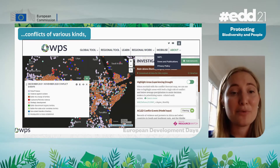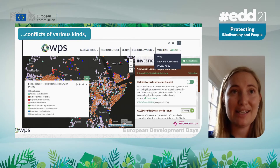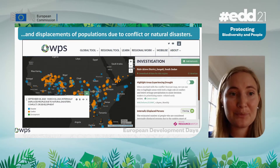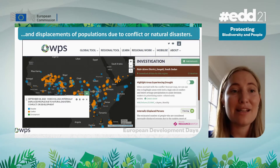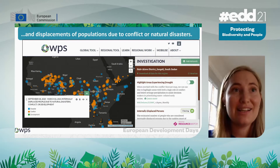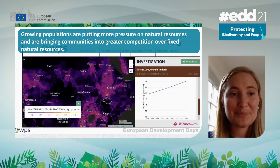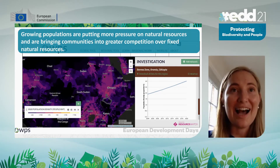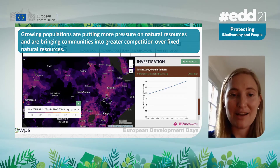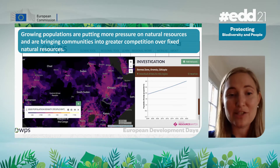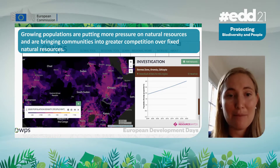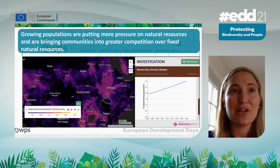We can also check out previous conflicts using the ACLED data, and view displacement of populations due to conflict and natural disasters. We can understand more about what's going on in local regions — for example, if population is growing and putting more pressure on certain regions.